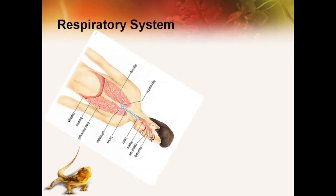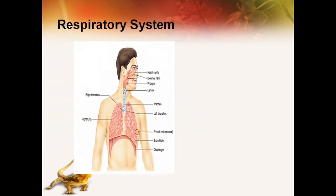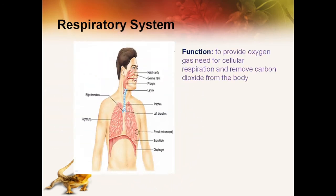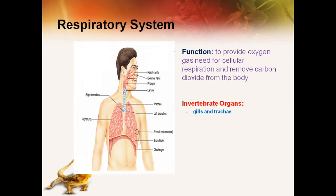First, we will see what is the respiratory system. Respiratory system is a system which provides oxygen gas which is needed for cellular respiration, and it removes the carbon dioxide from the body. The respiratory organs vary in invertebrates and vertebrates. In invertebrate organisms, the respiratory organs are gills and trachea, while in case of vertebrates, the respiratory organs are lungs and gills.